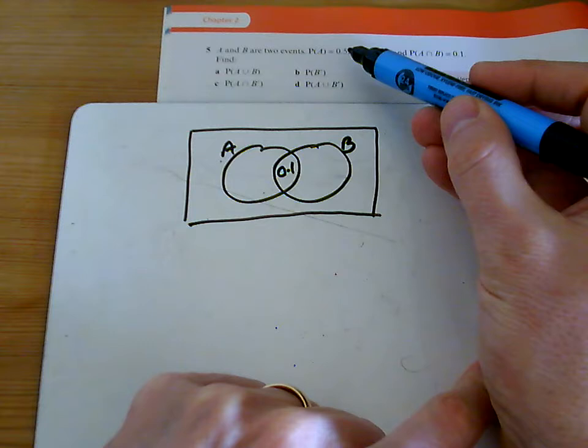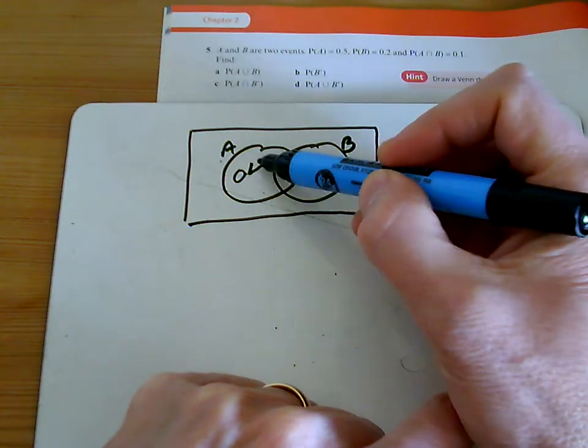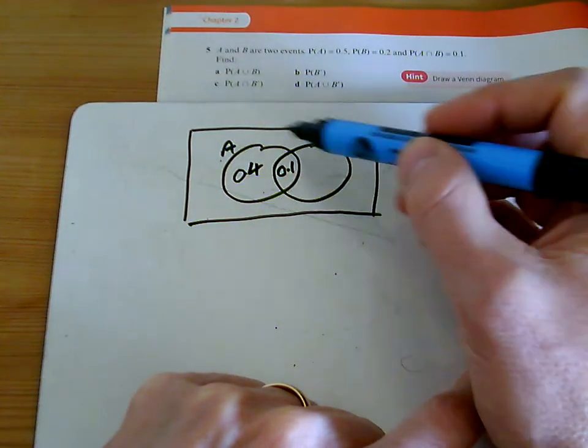Now be careful, the property of A is 0.5. That means you don't put a 0.5 here, you put a 0.4 in there, because the total there now will be 0.5.